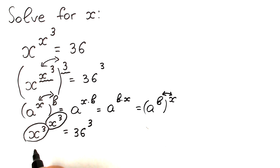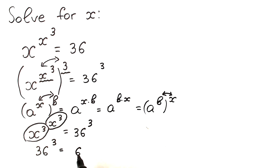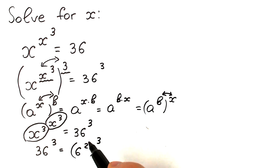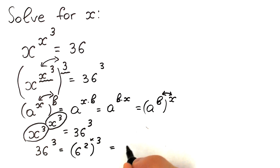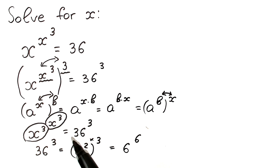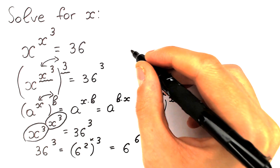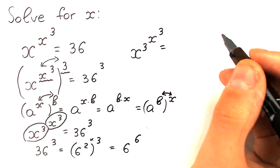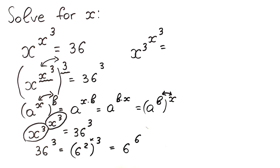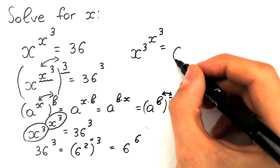Let's simplify 36 to the power 3. We can write 36 as 6 squared, so we have 6 squared raised to the power 3. Applying our exponent rule, 2 times 3 gives us 6, so this equals 6 to the power 6. Now rewriting the full equation: x cubed to the power x cubed equals 6 to the power 6.